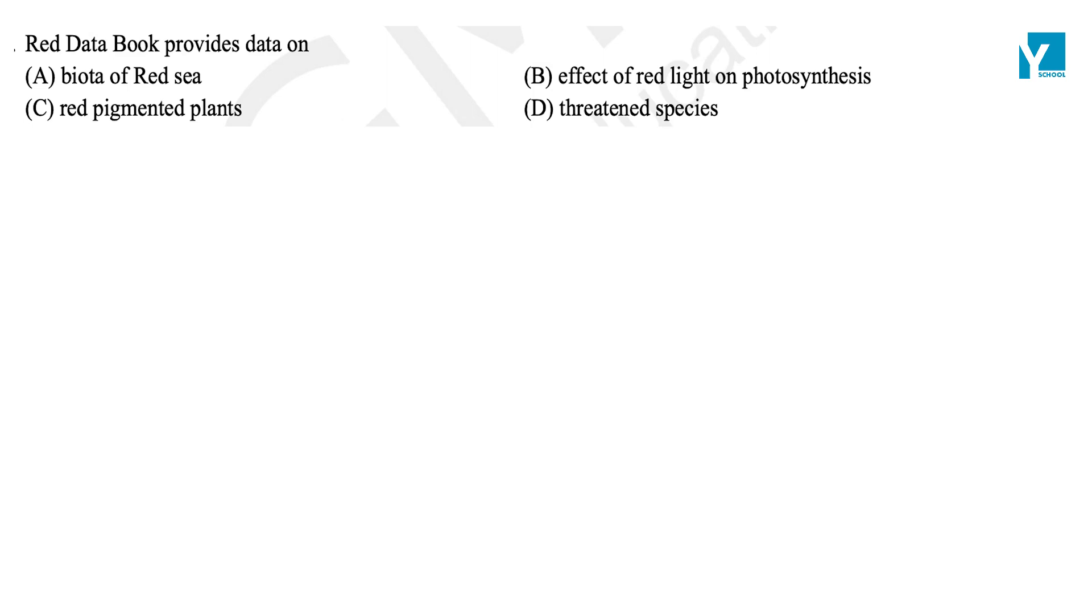Red Data Book is a data book where we define 7 to 8 categories of species, like No Data Deficient Species, Vulnerable,